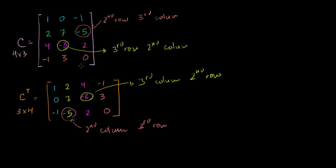As an interesting aside, what happens if we take the transpose of the transpose? If we take C transpose and then transpose that, what do we get? To go from C to C transpose, we switched all the rows and the columns. When you take the transpose again, each entry goes back: the element that was in the second row, third column moved to the second column, third row, and transposing again brings it back to the second row, third column. So the transpose of C transpose is just equal to C — you swap all the columns, and when you transpose again you swap them all back.